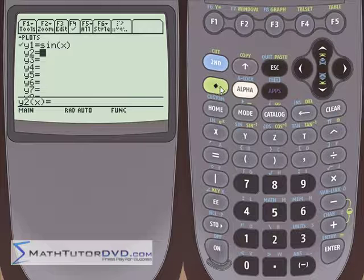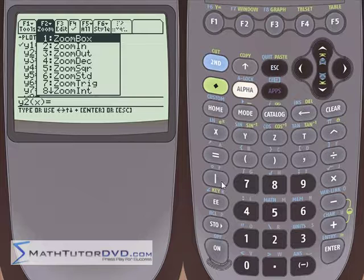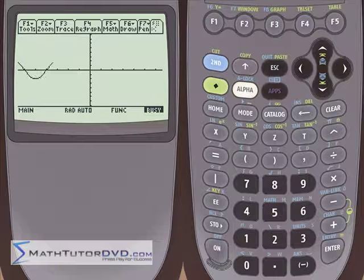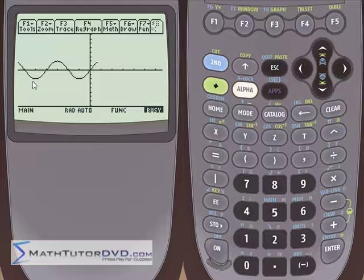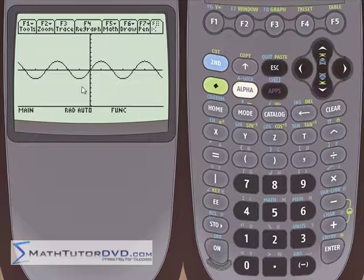Let's just to make it look a little better, select zoom trig number seven and watch it plot the sine function. Notice that sine goes up and down and up and down. We have lots of peaks and lots of valleys and it happens over and over again.